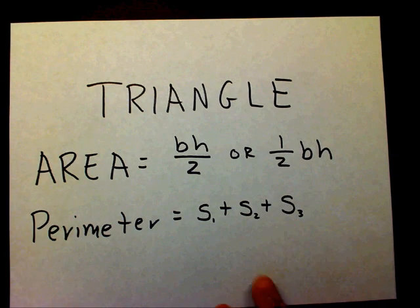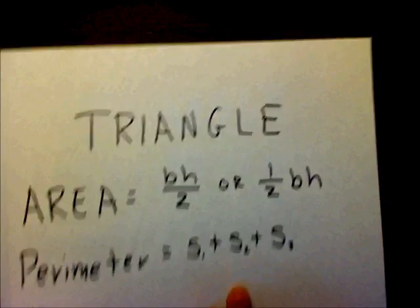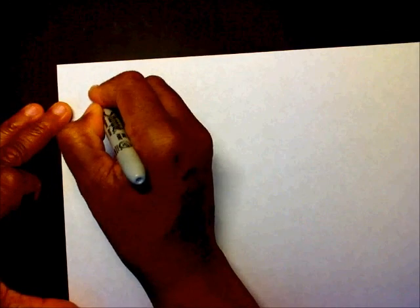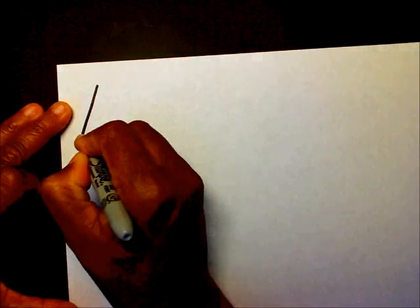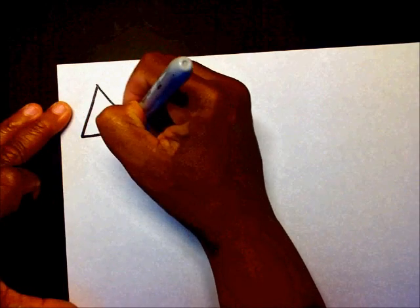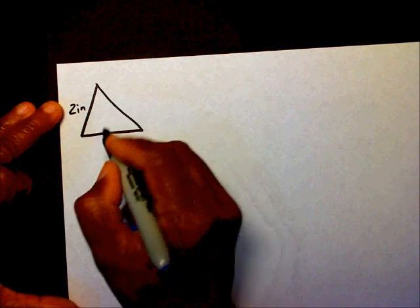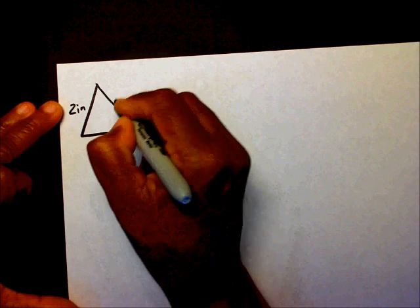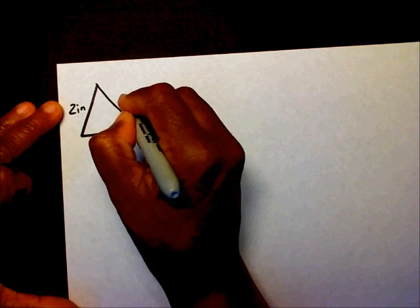Which is pretty simple. So let's add a triangle here. I tell you that this side was two inches, this side was three inches, and this side was four inches.